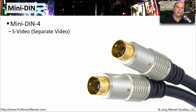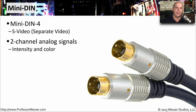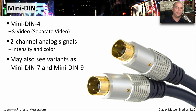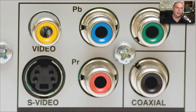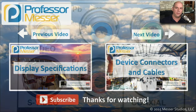You might also see video being sent over a Mini-DIN-4 connector. You can see the four pins on the inside. The type of video sent over these Mini-DIN-4 connectors is S-Video, which stands for Separate Video. This is a two-channel analog signal — one channel for intensity and the other for color. You may also see variants such as Mini-DIN-7 and Mini-DIN-9, changing the number of pins used. Here's a close-up showing the S-Video Mini-DIN-4, alongside composite video with the single yellow connector, and Y, PB, and PR for component video.